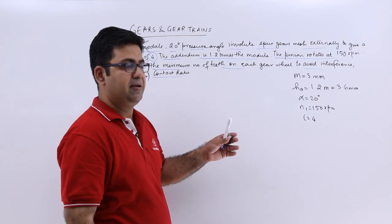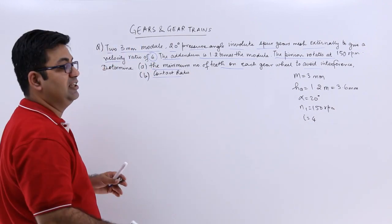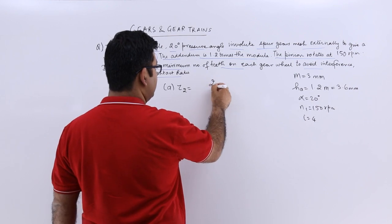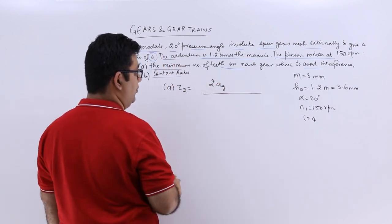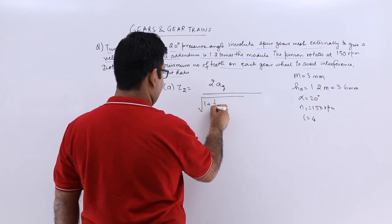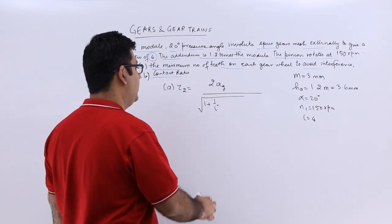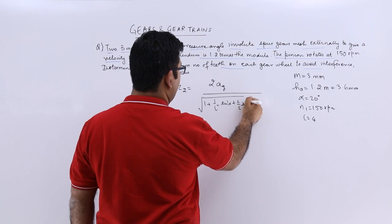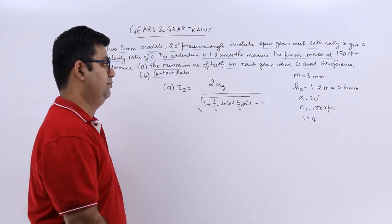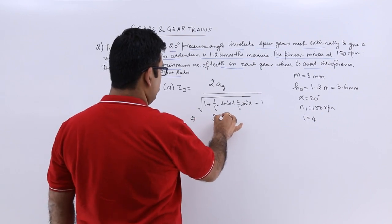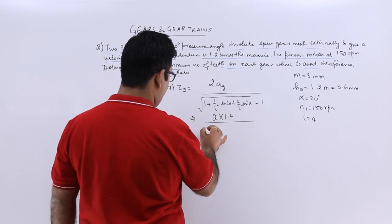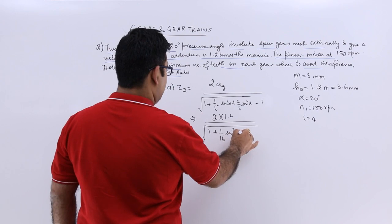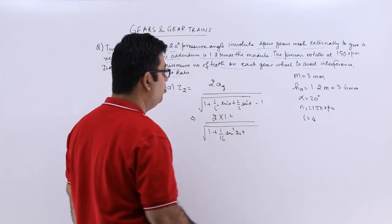Now if I find out the minimum number of teeth on gear first of all, it will be z2 which is 2 times ag upon under root 1 plus 1 by i square sin square alpha plus 2 by i sin square alpha minus 1. Let's put in the values.